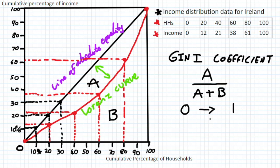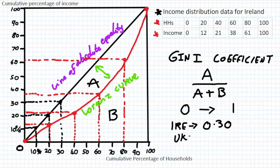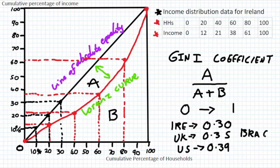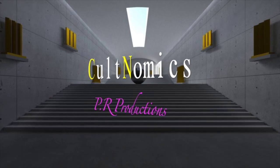Every country falls somewhere between these two absolute points. In the case of Ireland, the Gini coefficient is 0.30, which is relatively low in both a European and global perspective. Comparing to the UK, the Gini coefficient is 0.35, while the US has a Gini coefficient of 0.39. For an emerging market such as Brazil, inequality is larger, with a Gini coefficient of 0.50. I hope you come back to Cultnomics soon — bye for now.